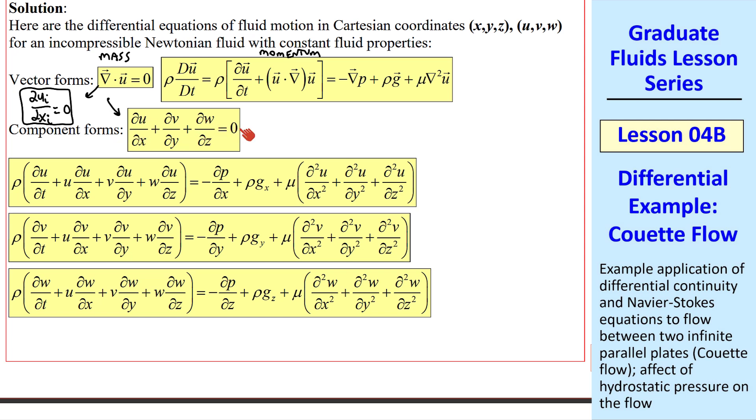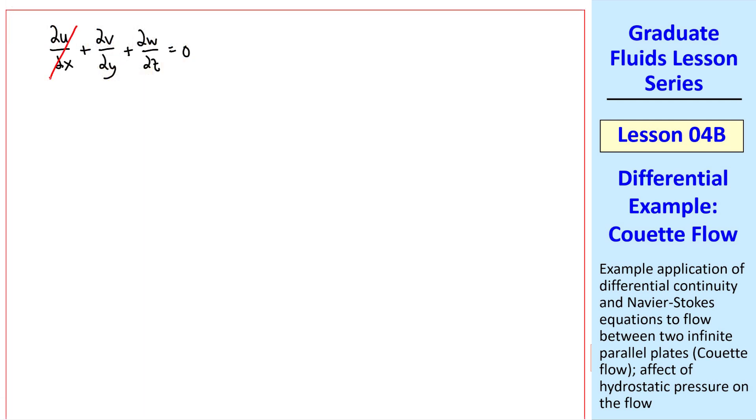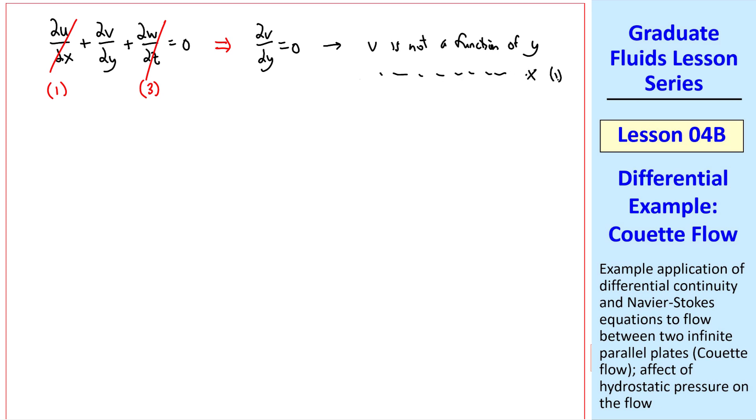Let's look at mass conservation first. By assumption one, del del x of anything is zero. By assumption three, nothing changes with z, therefore del v del y equals zero. In other words, v is not a function of y. But v is not a function of x either by assumption one. V is not a function of z by assumption three. And v is not a function of time t by assumption two.